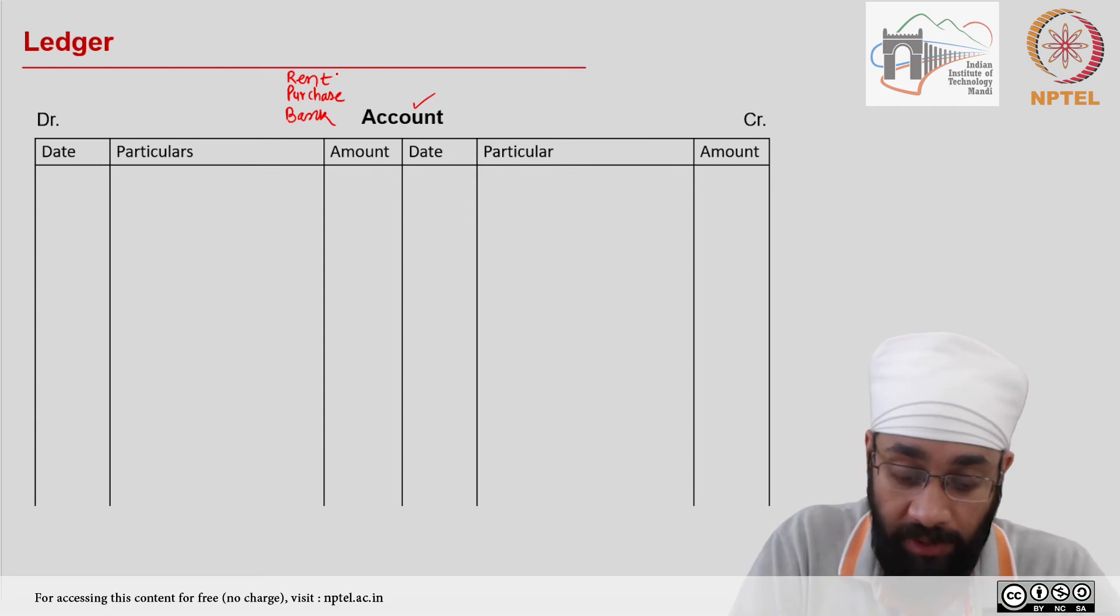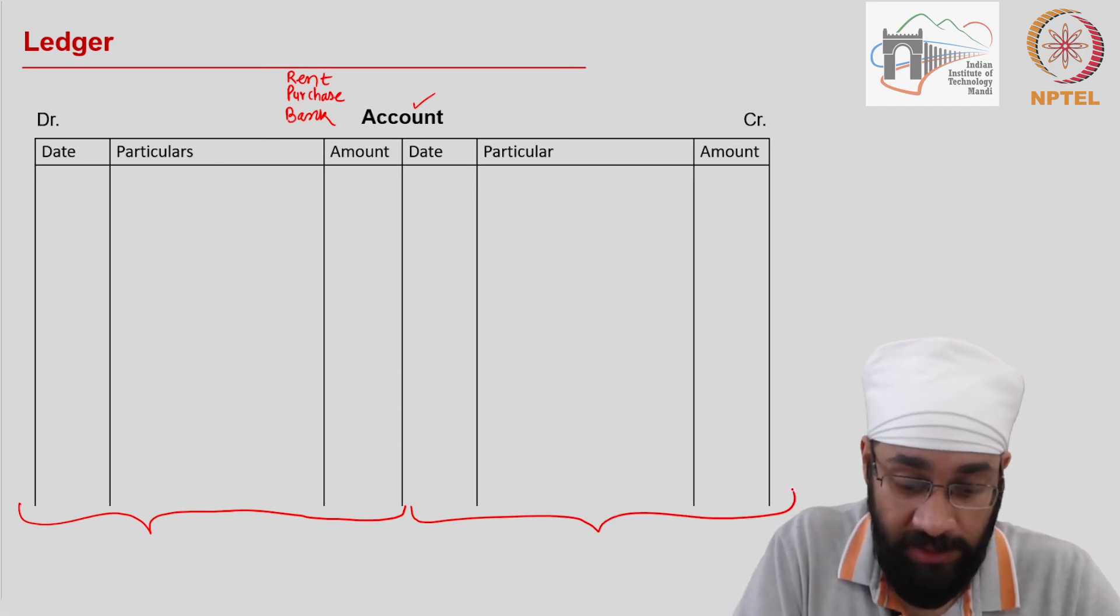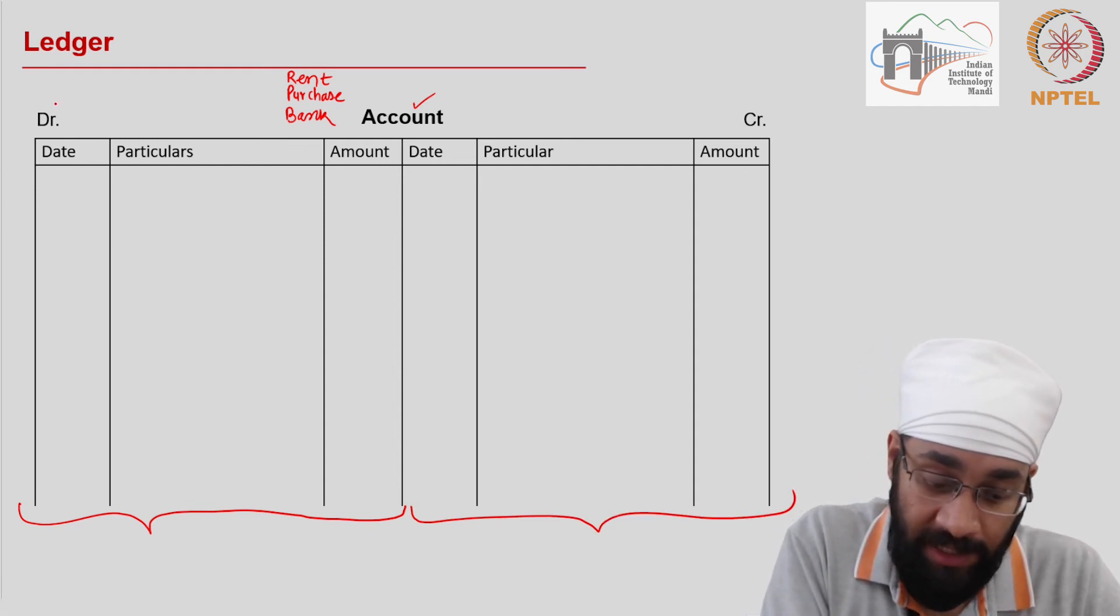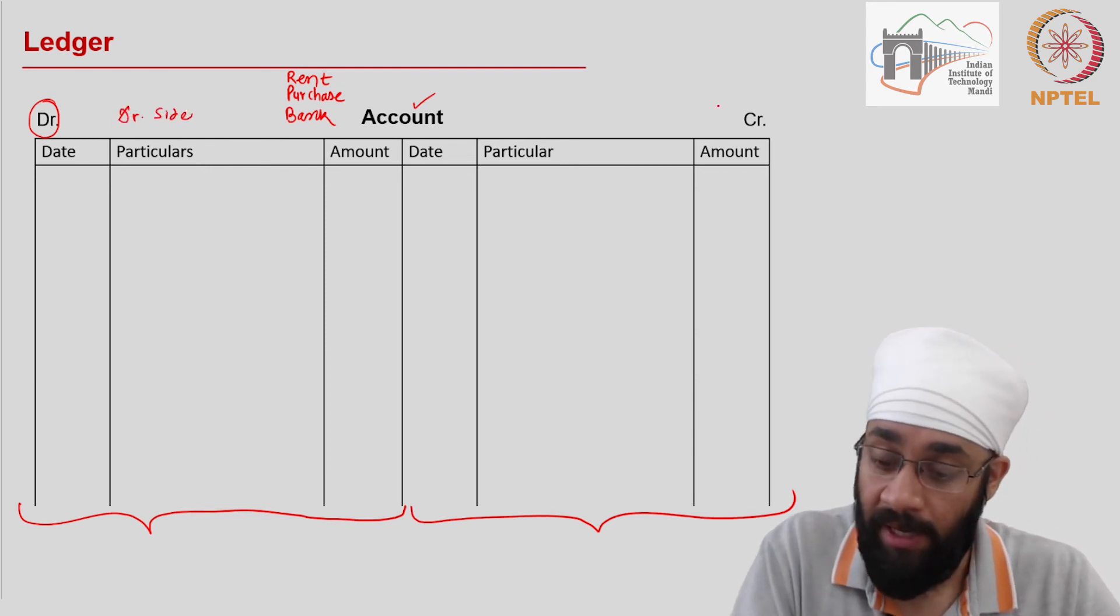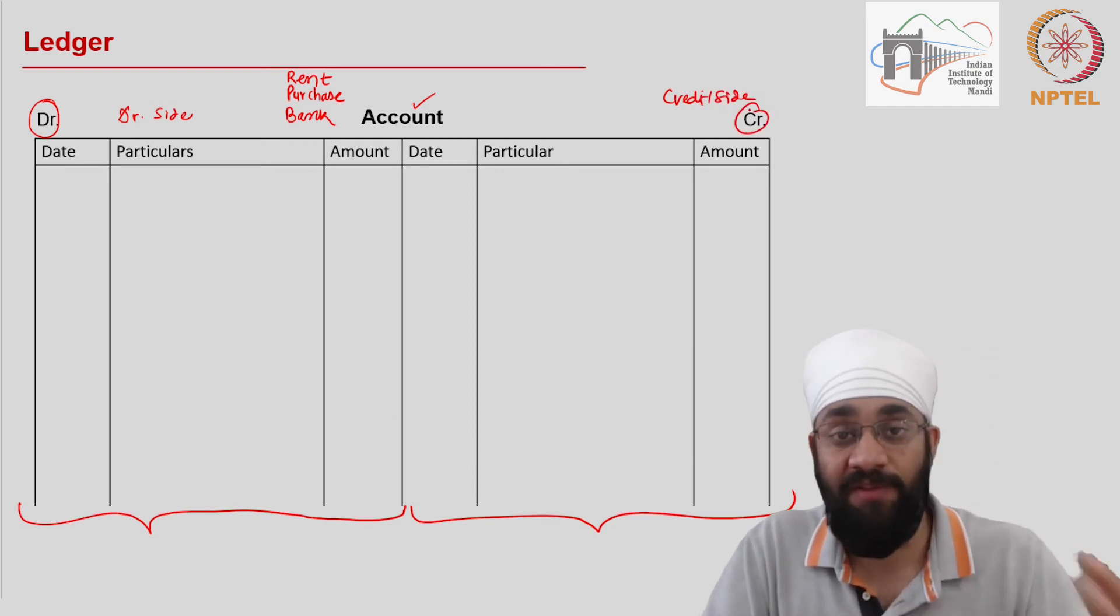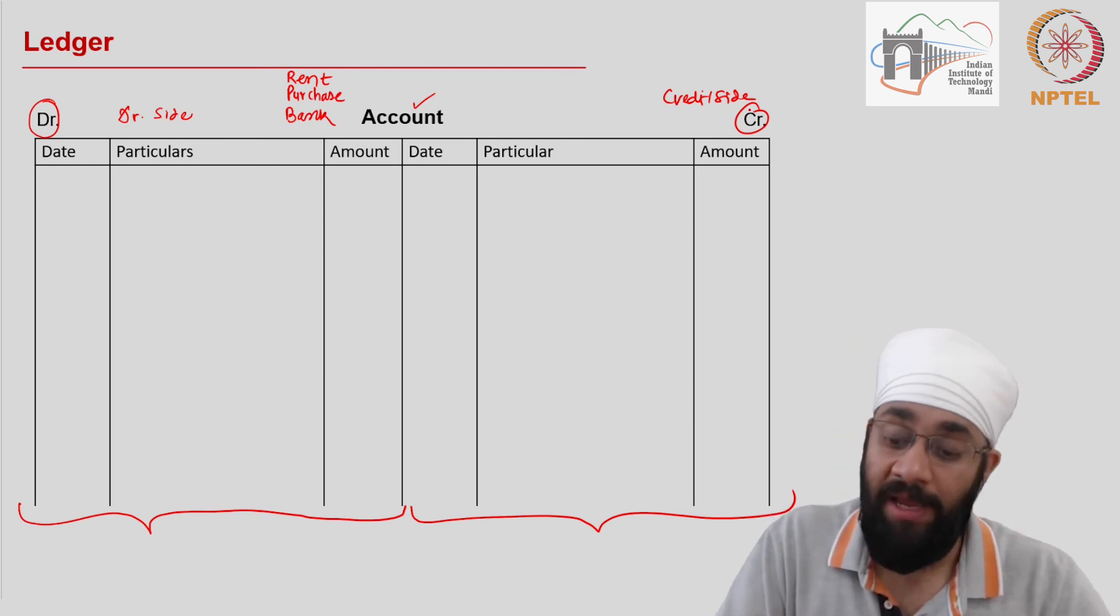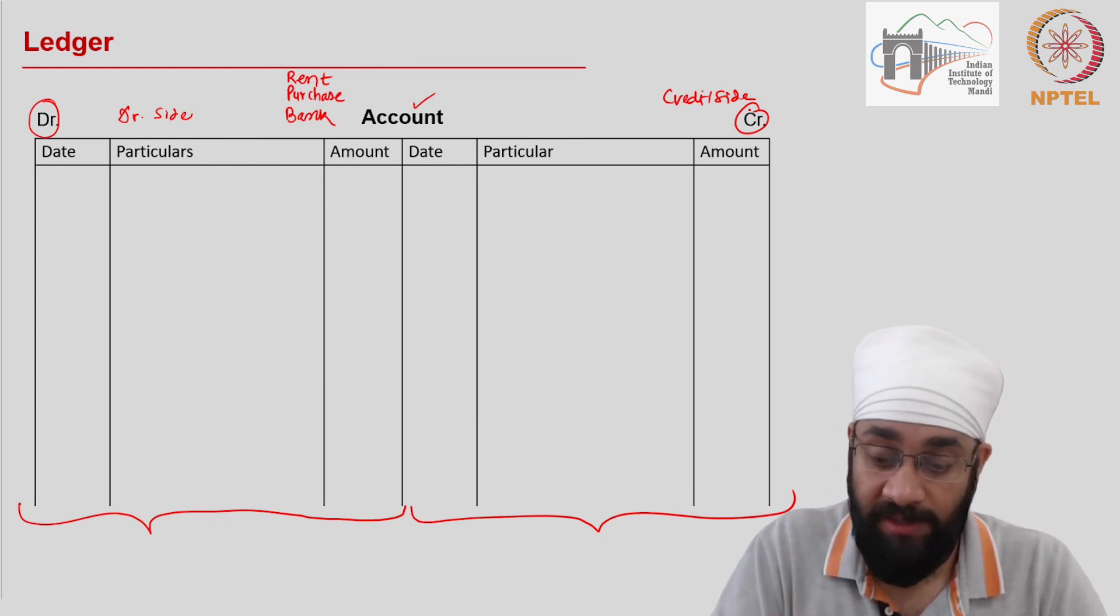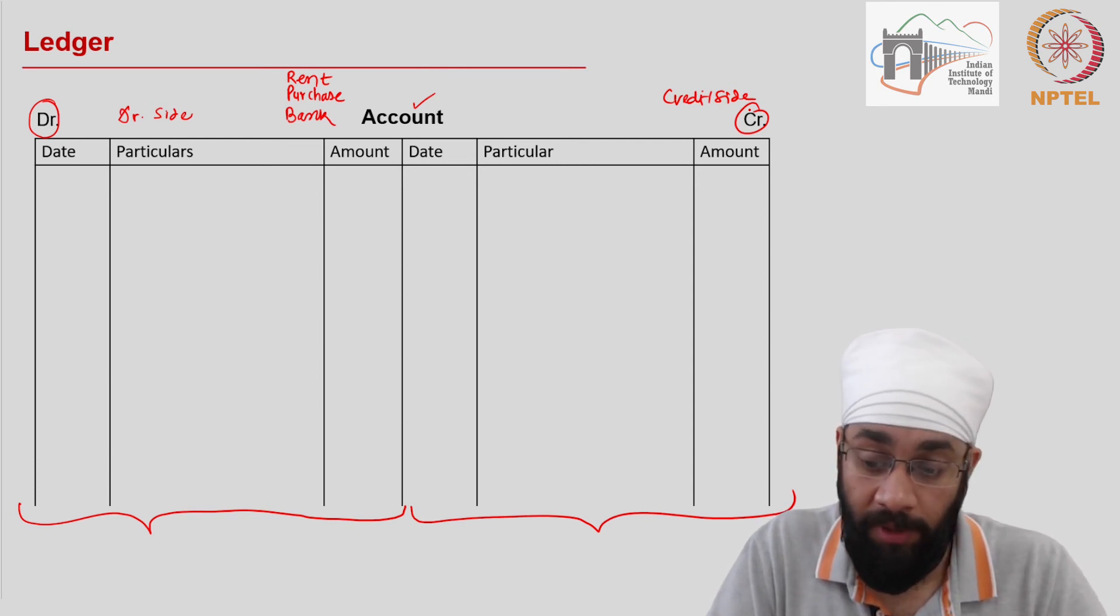Now the format of the account has two sides. This side is called a debit side and this is credit side. The convention is that you have the debit side on the left always and credit side on the right hand side. This is how it is always going to be presented no matter where you look in the textbooks or online resources.